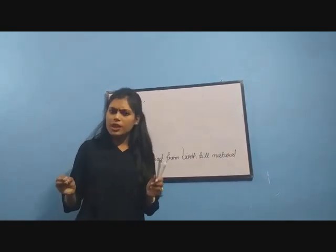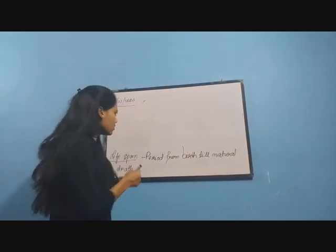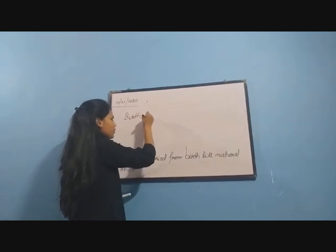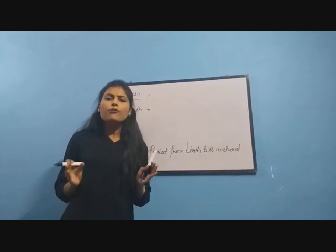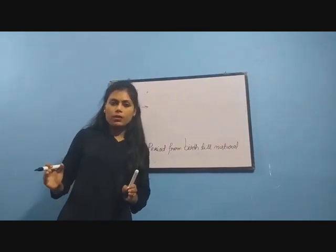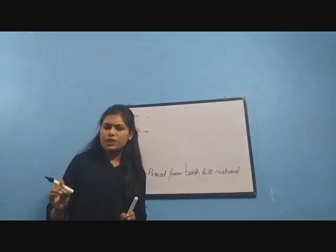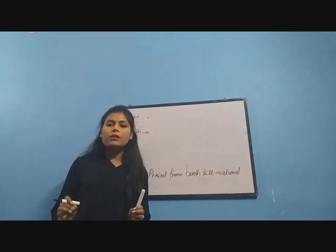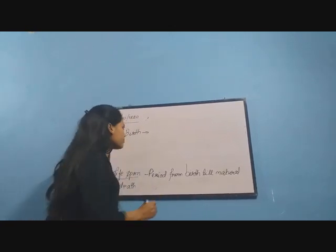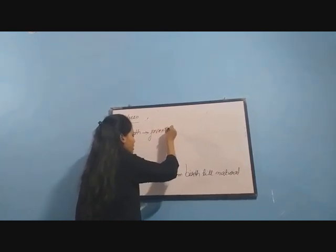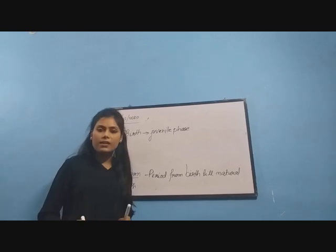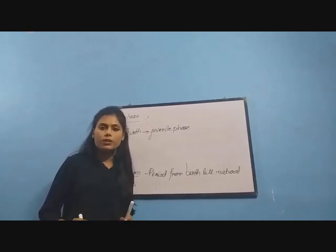There are certain stages in between birth and natural death. After birth, we have a particular phase of growth and development before an organism is able to reproduce. This period of growth and development after birth is referred to as the juvenile phase — the period before an organism is fit to reproduce.